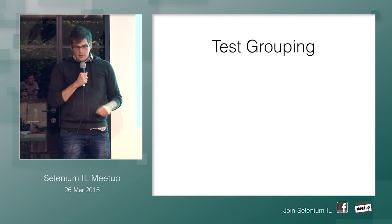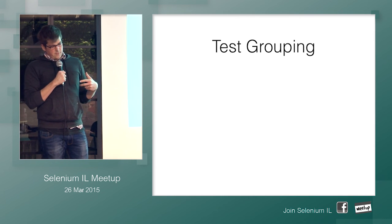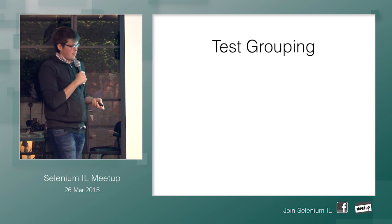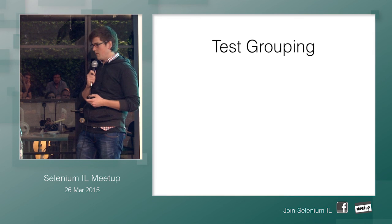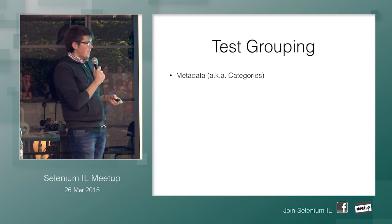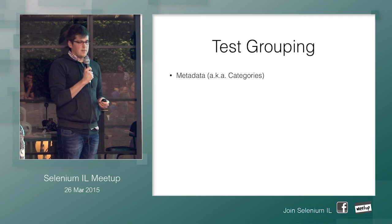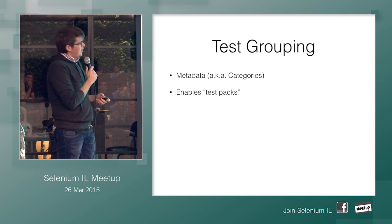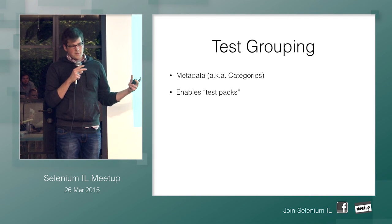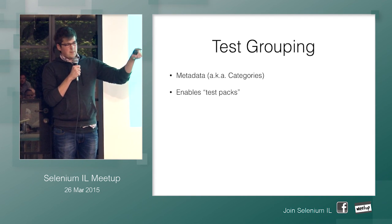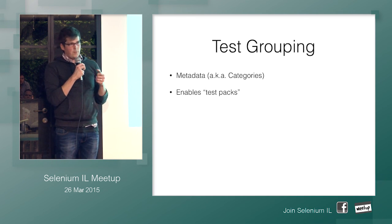Jumping in from everything we talked about, we're in the middle of packaging things into a framework because everybody wants to build their own. So test grouping — what that looks like and why it's important. It's metadata, and in JUnit you can apply categories, which enables you to flexibly create test packs. You can dynamically pull out tests from different files using categories.